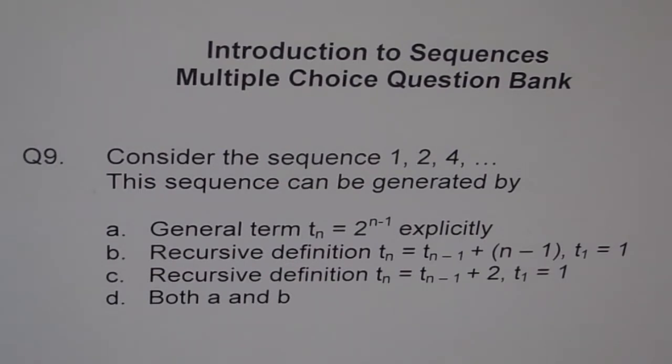Option A: general term T_n equals 2 to the power of n minus 1 explicitly. Option B: recursive definition T_n equals T_(n-1) plus n minus 1 where T_1 equals 1. Option C: recursive definition T_n equals T_(n-1) plus 2 where T_1 equals 1. Option 4 is both A and B.